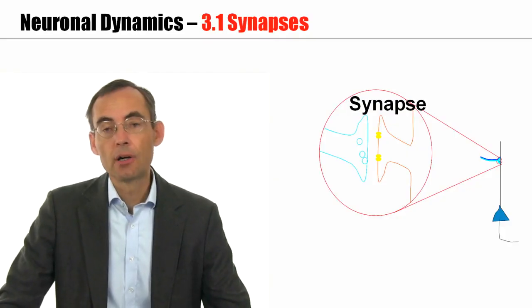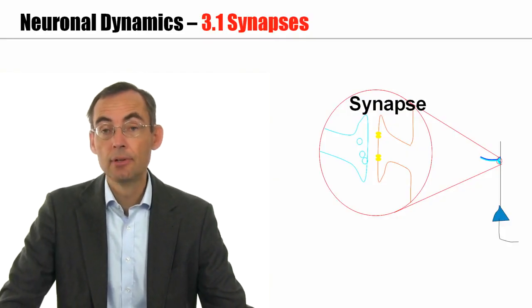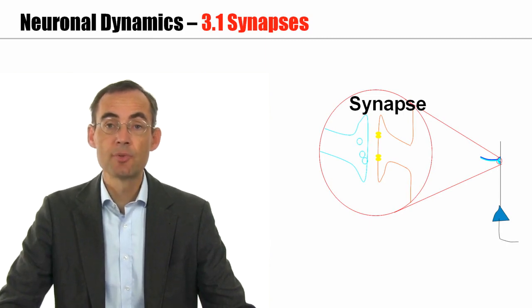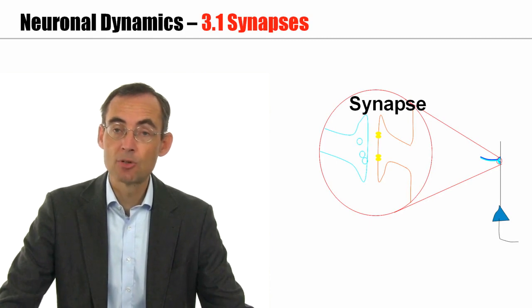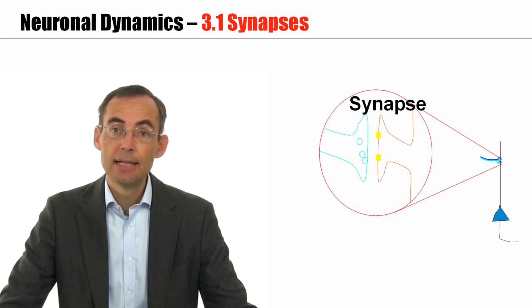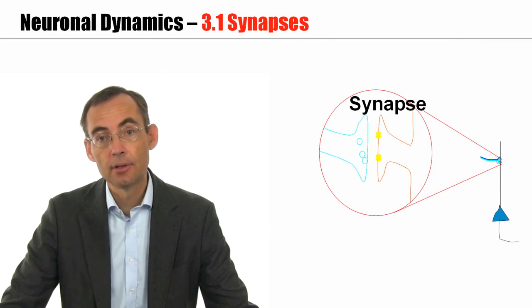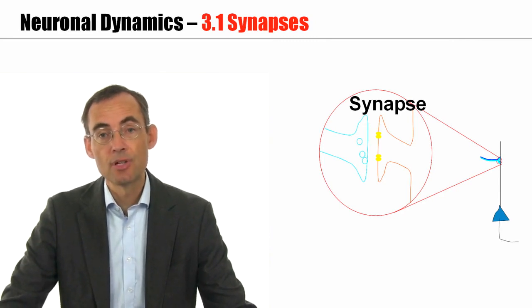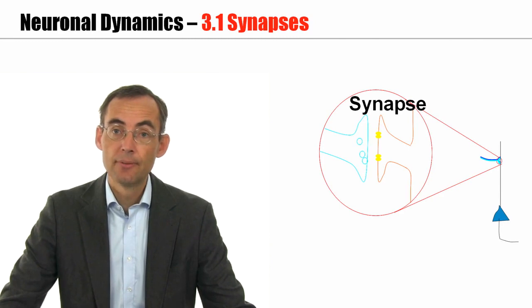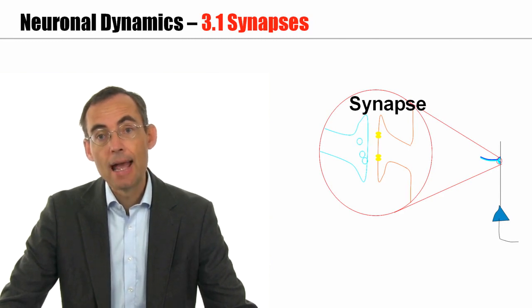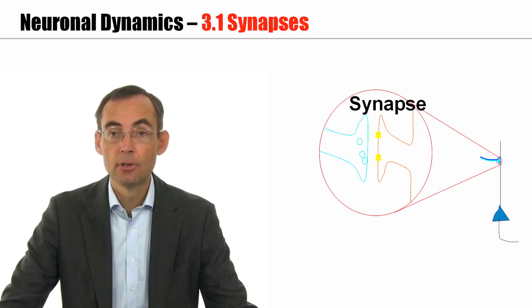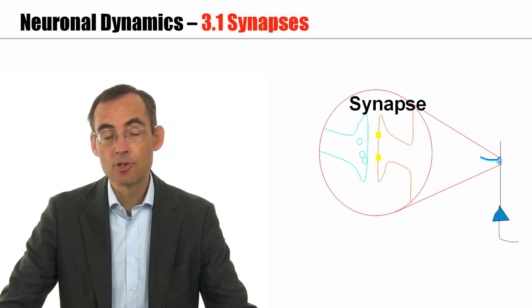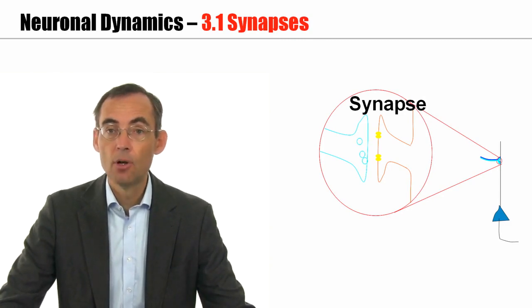So, synapses are important contact points between neurons. They are important for signal transmission. If a spike arrives at the presynaptic terminal, the neurotransmitter is emitted. It's captured by the receptors on the postsynaptic side. If it's captured, then the channel opens, which eventually leads to a change in conductance and to an input current into the neuron. And this input current can be described with a simple modeling approach.